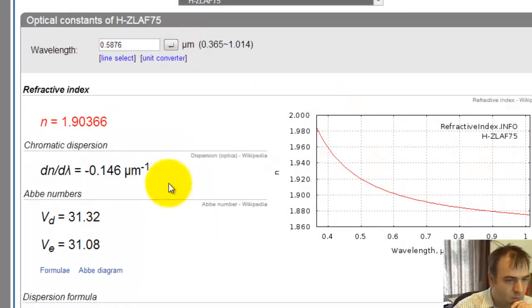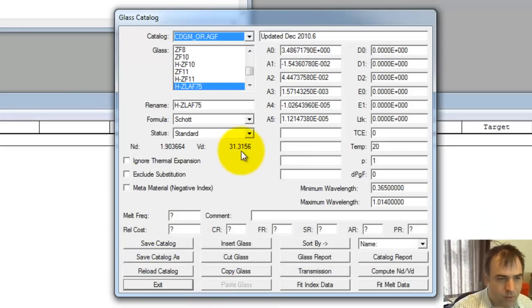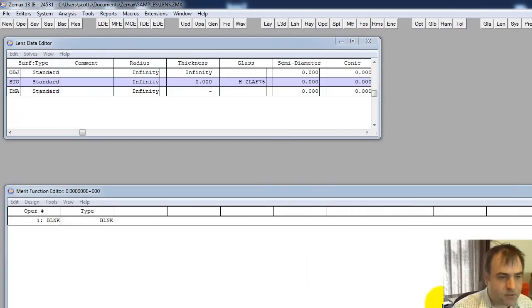Let's verify. We're saying that the index at the D line, 587, is 1.903664. Let's see, does that match? 1.90366, that's matching. V sub D, 31.32. V sub D, 31.32. So this is working out. This looks like we fit this sufficiently. Let's hit exit.